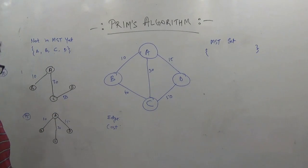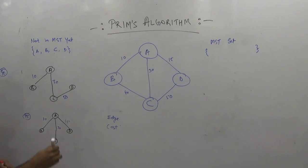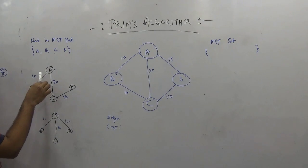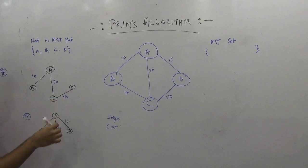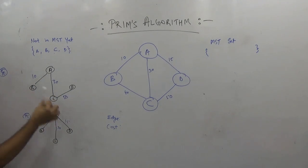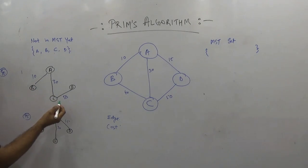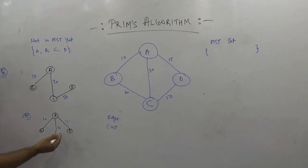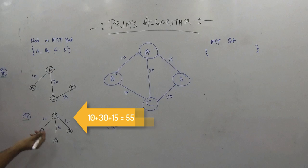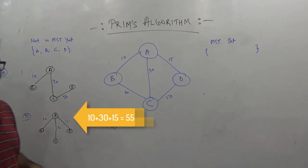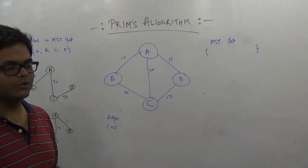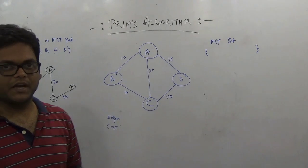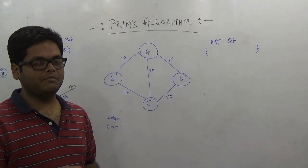Each of those spanning trees is going to have a cost. We calculate the cost of a spanning tree by adding up the weights of the edges of that spanning tree. For example, this spanning tree has a total cost of 50 plus 30 plus 10 equals 90. And this one has cost 10 plus 30 plus 15, that's 45. Similarly, we can draw other spanning trees and see the cost of each, then pick the minimum spanning tree.